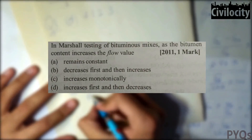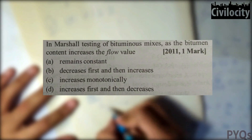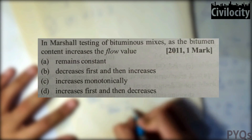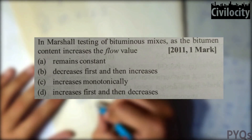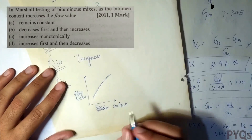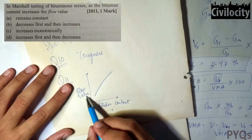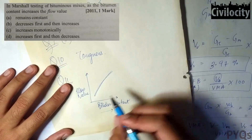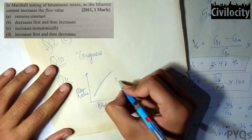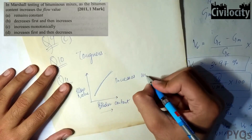Question eleven: in Marshall testing of bituminous mixes, as the bitumen content increases, the flow value also increases. The graph of flow value versus binder content shows a monotonically increasing curve, so increasing binder content increases flow value monotonically.